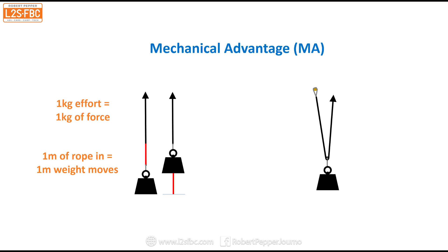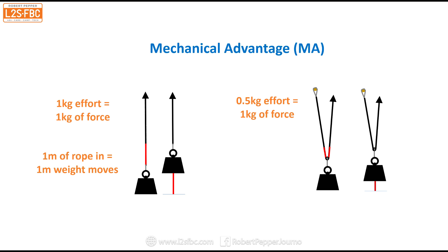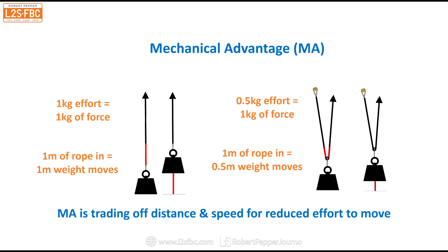Now if we put a pulley or snatch block on it, things change. If we take in that single metre, you can see that metre of rope take-in is actually half a metre on both lines. The weight only rises half a metre even though we've taken a metre of rope. But half a kilogram of effort gives us one kilogram of force. Mechanical advantage is all about trading off distance and speed for reduced effort. There's some friction in the pulley block so it's not precisely half-to-one, but it's close enough for this video.